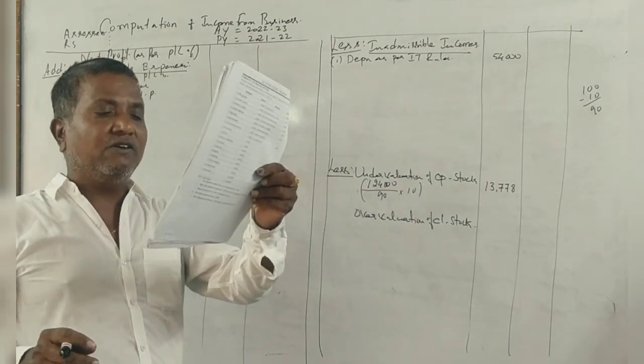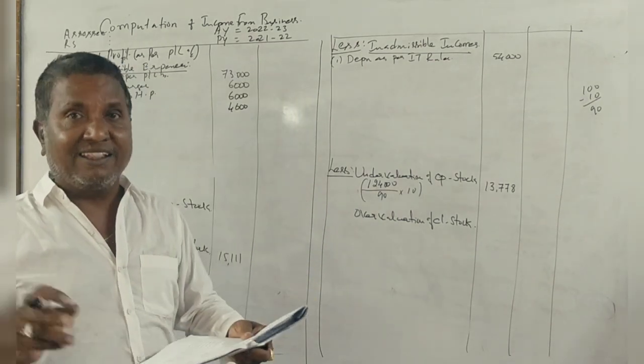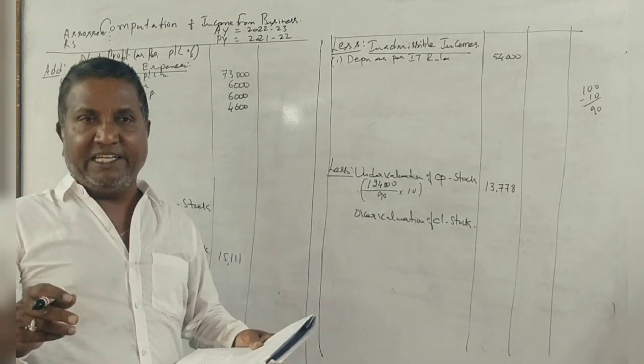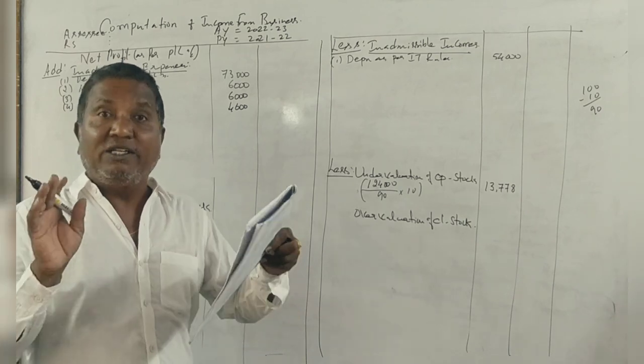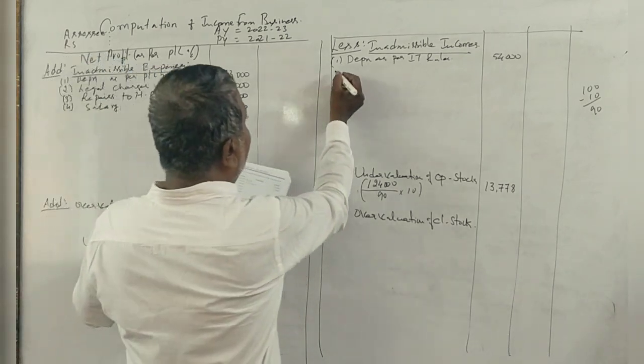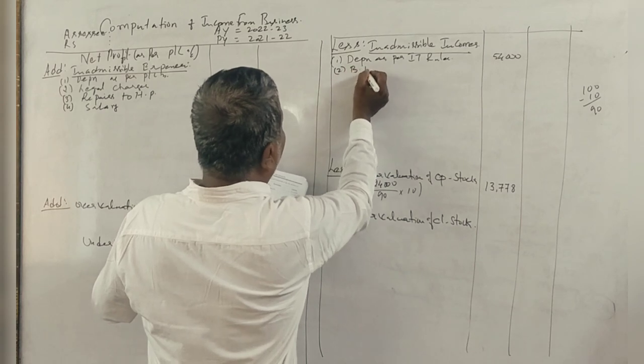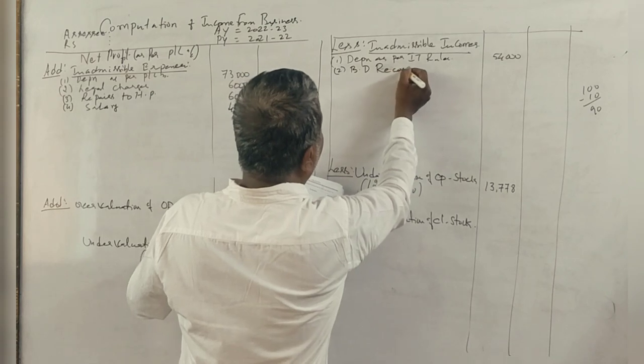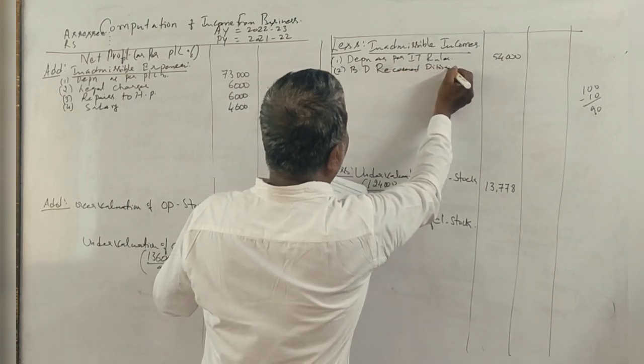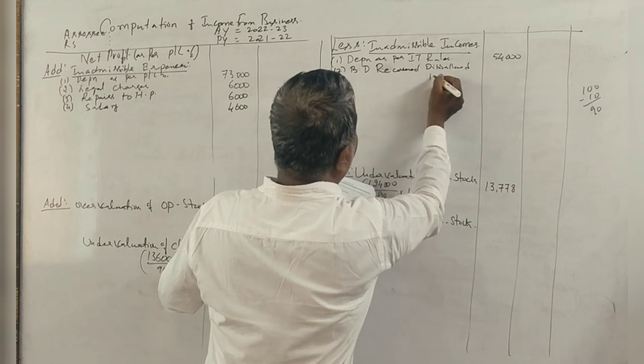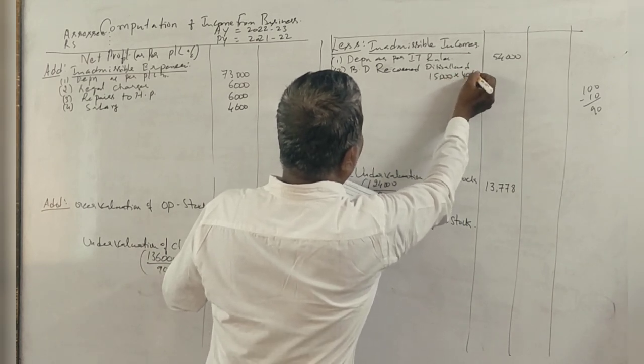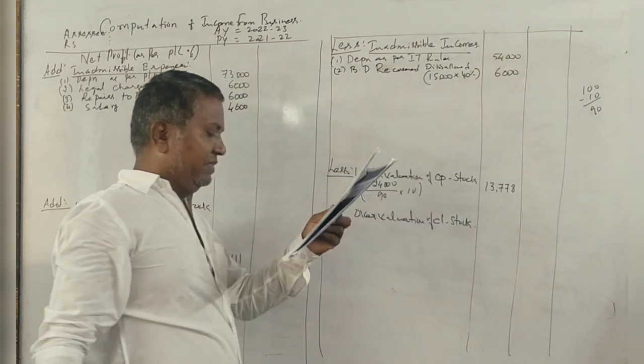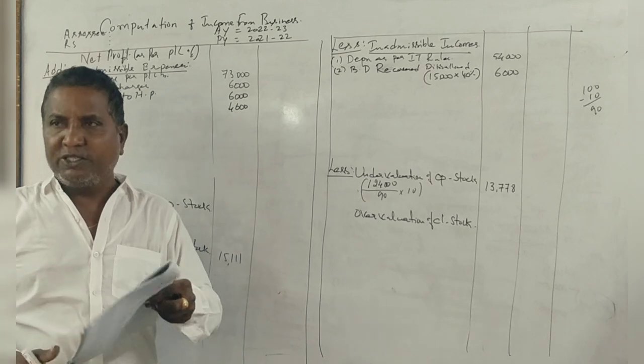40% of bad debts recovered were disallowed earlier. So in the credit side, bad debts recovered is shown. The money received, 40% of which was not allowed by IT. This belongs to the income to be collected. Now adjustments complete.